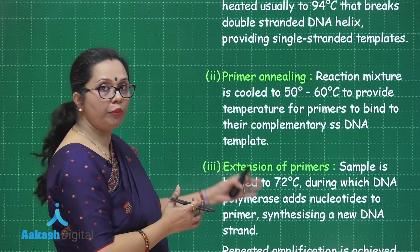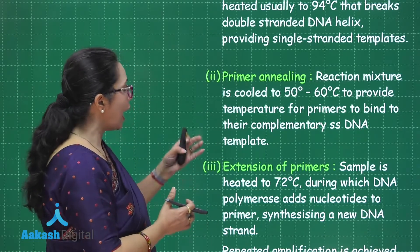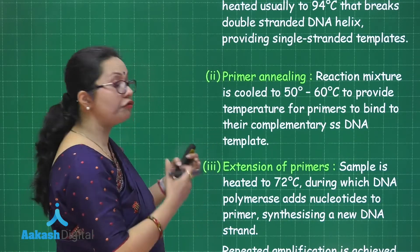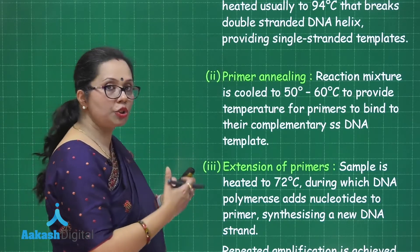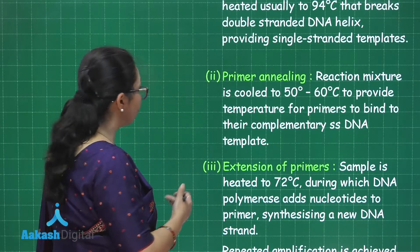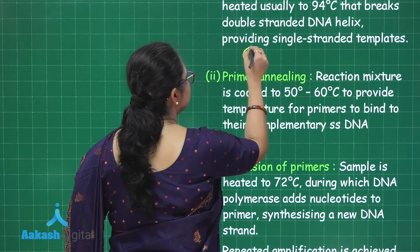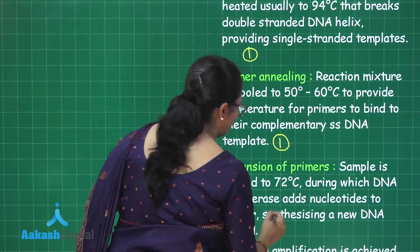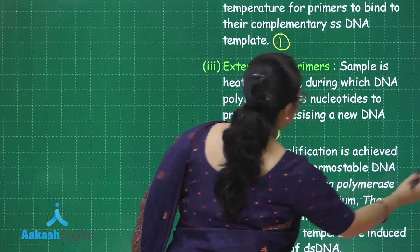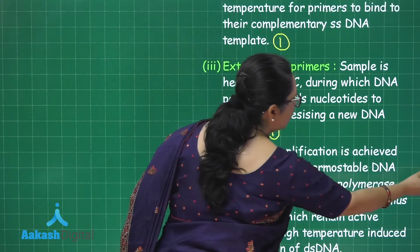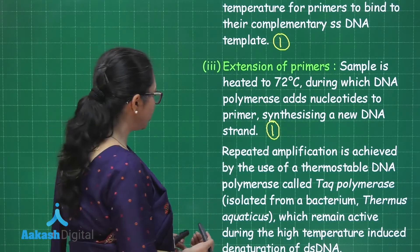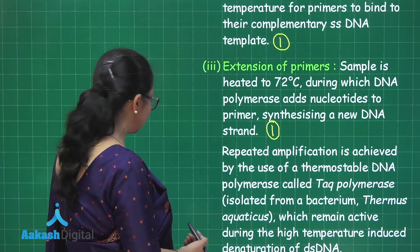The last step is extension of the primers. Taq polymerase is used here, and the temperature is kept at 72 degrees Celsius. Nucleotides are added to the mixture so that Taq polymerase — a heat-stable DNA polymerase — constructs new strands moving in the 5' to 3' direction. Each of these three steps is worth one mark. Repeated amplification is achieved using thermostable Taq polymerase.